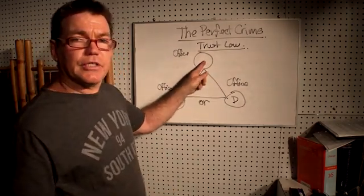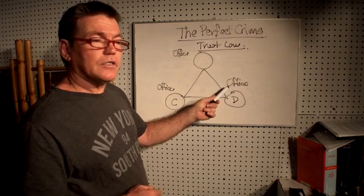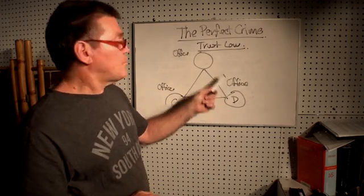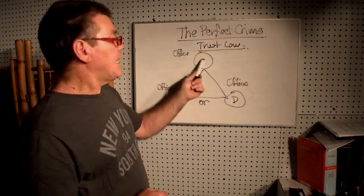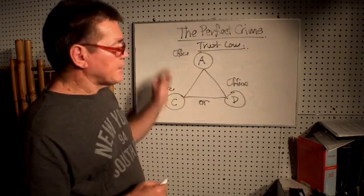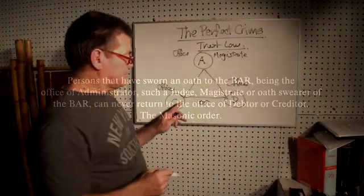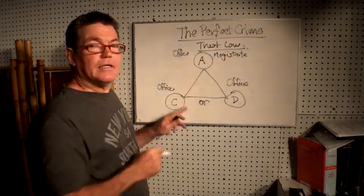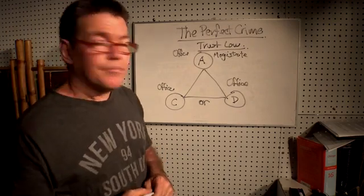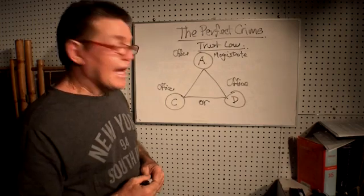We can also become the administrator. But once the administrator — that's the judiciary, the judges, the magistrates — once the judiciary signs or swears an oath to leave the debtor or creditor standing and become the administrator, that oath is a life oath. If they are told how the system works, it's on the condition that they never return back. And if a magistrate or a judge ever attempts to act as the creditor, the magistrate will surely die. The Vatican will make sure he doesn't last.